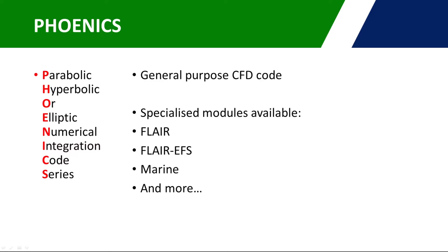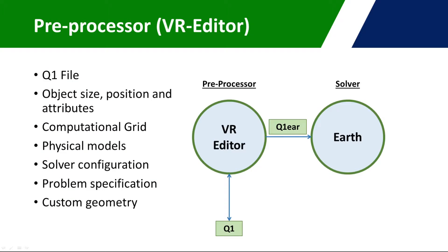There are three main components to Phoenix: the pre-processor, the solver, and the post-processor. The pre-processor primarily deals with the Phoenix Q1 file. This file contains all the input required by a simulation: positions and sizes of objects and their attributes, computational grid, physical models, solver configuration, and almost everything about the model setup. The pre-processor provides a graphical interface to set up this file, but is also accessible via a text editor.